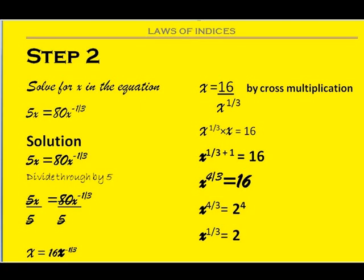In step 2, we're looking for x. The first thing to do is to divide through by 5, giving x equals 16x raised to the power minus 1 over 3. According to the law of indices, a negative power gives a reciprocal — hence x equals 16 over x raised to the power 1 over 3. Cross-multiplying and applying the first law of addition of powers, we have x raised to the power 4 over 3 equals 16. Please take note of the simplification process. Because 16 equals 2 raised to the power 4, the powers of 4 on both sides can cancel out, giving x raised to the power 1 over 3 equals 2.